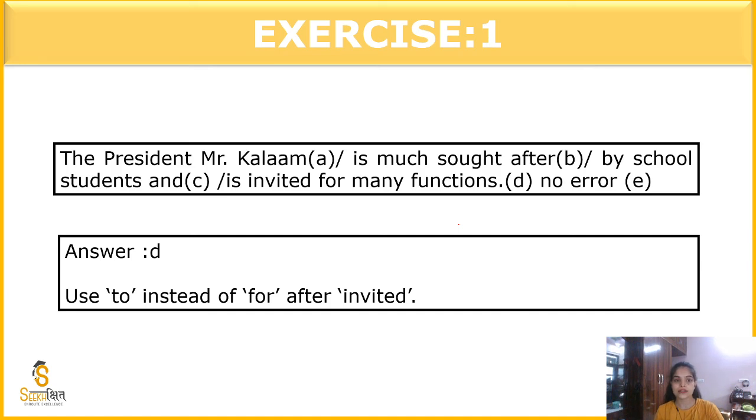The next question is, the president Mr. Kalam is much sought after by school students and is invited for many functions. So, where will the error come? It is in the part D. Because, what is written here? We should use 'to' instead of 'for'. Here, 'to' will come. 'For' will not come. He is invited to functions. The president Mr. Kalam is much sought after by school students and is invited to many functions. 'For' will not come, 'to' will come.